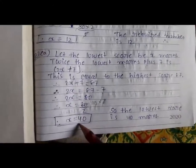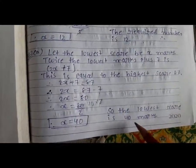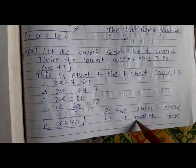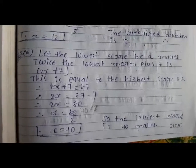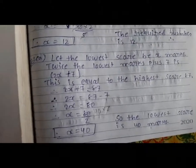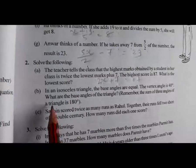X is equal to 40. So, the lowest score is 40 marks. Okay? Next, let's look at the following problem.